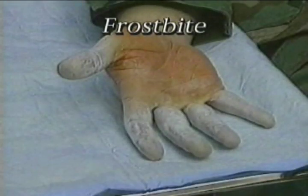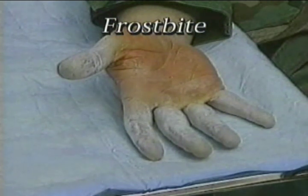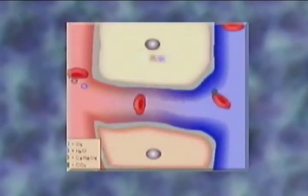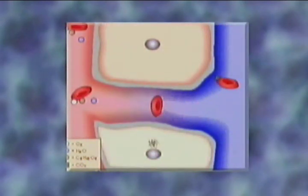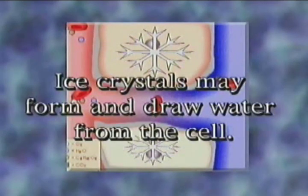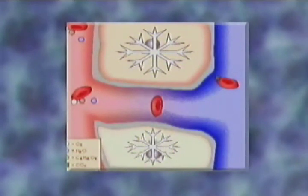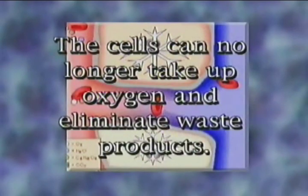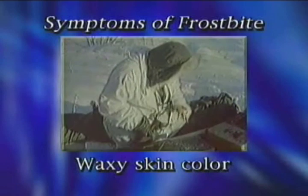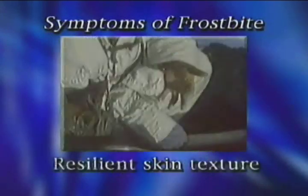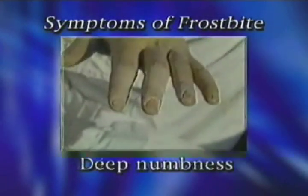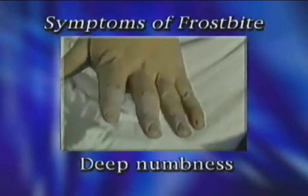Frostbite is the freezing of tissues, which may include the skin, muscles, tendons, and bone. When the cells in tissue freeze, all cellular activity ceases. Ice crystals may form and draw water from the cell, causing physical damage. The cells can no longer take up oxygen and eliminate waste products. Some symptoms of frostbite include a waxy skin color, skin texture that is resilient to the touch, and a deep numbness to the affected area.